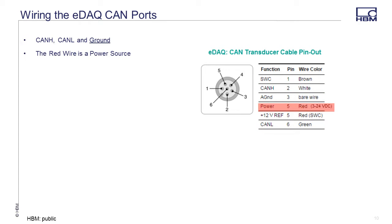The red wire is a power source for CAN transducers. Unless you are working with an obsolete single wire CAN network, never apply external or vehicle power to the red wire or pin 5 of the CAN connector. Doing so may cause damage to the CAN port. For the CAN vehicle bus module, pin 5 or the red wire is not active. It cannot provide transducer power.